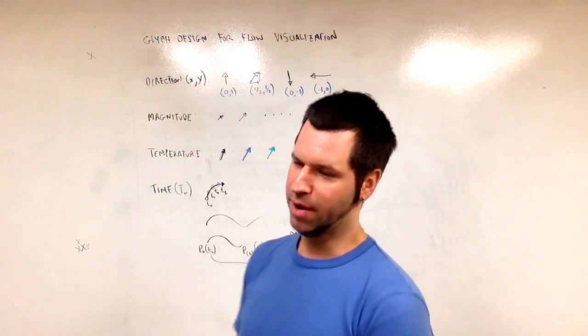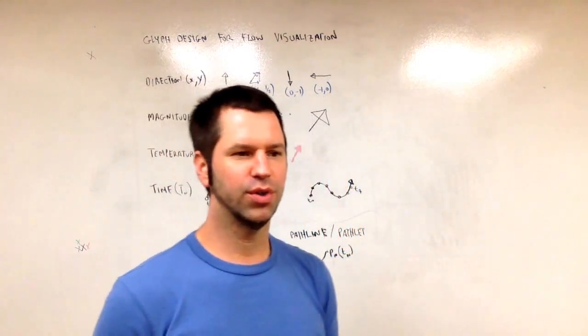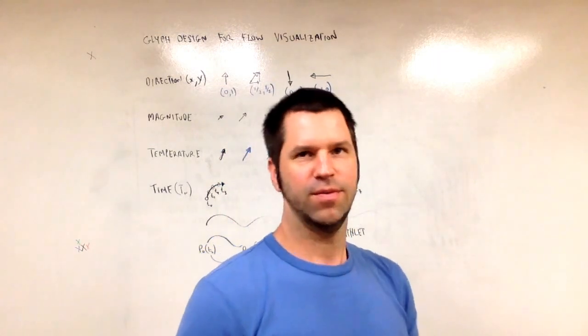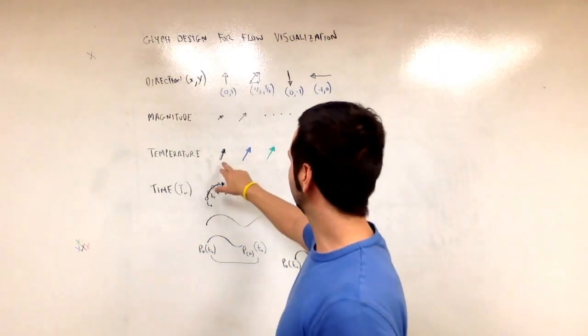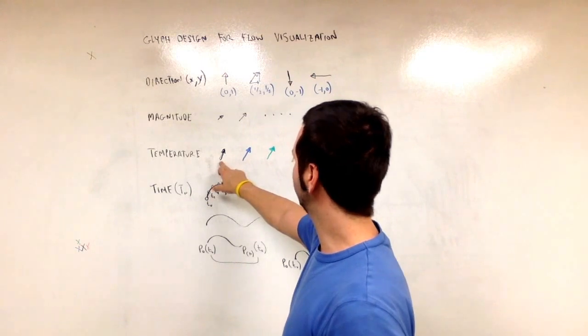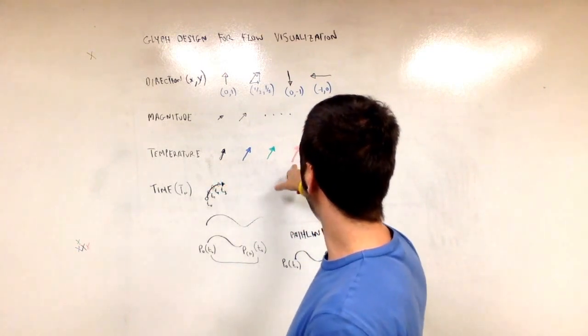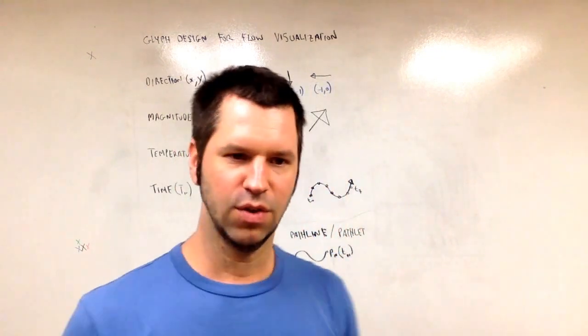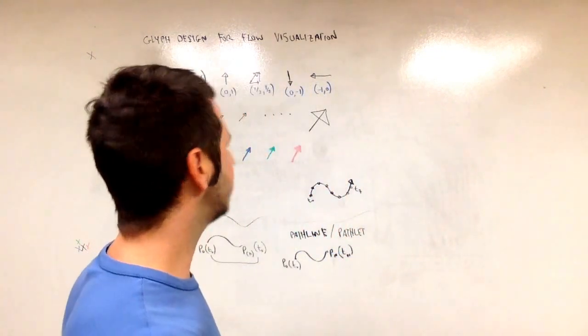Some people I've seen in many papers that encode time, they map time to color. So for example, old time steps or early time steps are mapped to black while later time steps are mapped to red or something like this. So this is just one possibility.